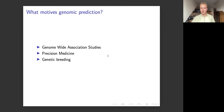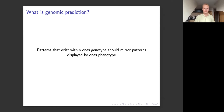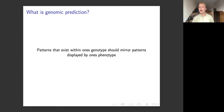What is genomic prediction — what's the actual idea? Genomic prediction comes from the perspective that there exist patterns within one's genotype which should mirror patterns displayed by one's phenotype — some form of a mapping between your genomic data and your phenotypic data. The assumption is that we should be able to formalize this mapping mathematically, and if we can, then we can use it to do all of those things I've just mentioned.